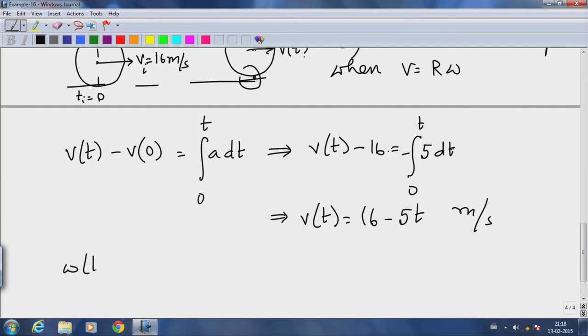Similarly, if I do the angular velocity calculation, omega of t minus omega of zero equals integral from zero to t of alpha dt.